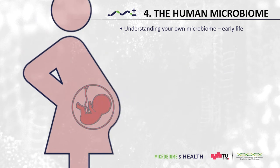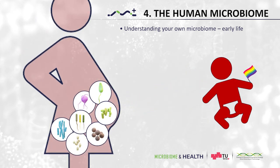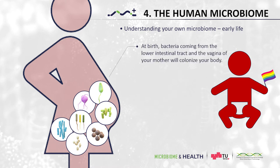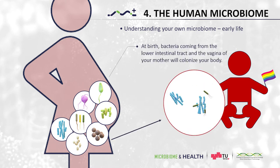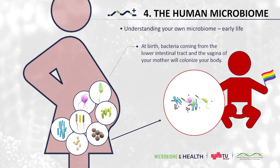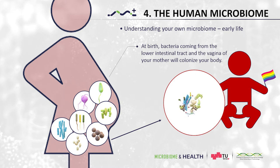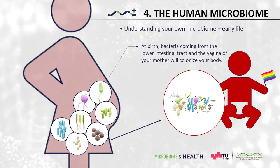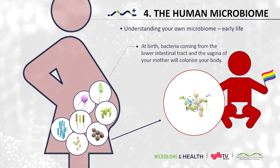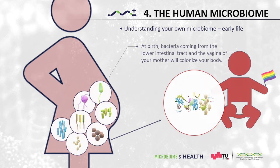At birth you will get in contact with a huge microbial load for the first time, coming from the lower intestinal tract and the vagina of your mother. This microbiome is not a random one — the lower intestinal tract and the vagina of your mother have a very specific microbiota, and their presence proves that these microbes were considered safe by your mother's immune system. During birth, these microbes will colonize your skin, your gut and even your lung, and you will need that microbial load since the environment you are born into has some challenges ready for you and your immune system.